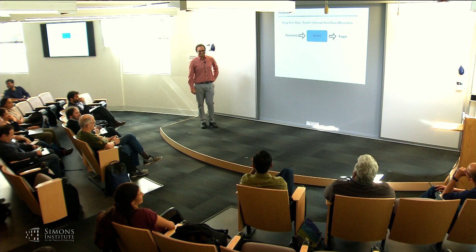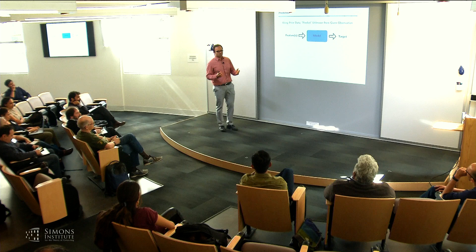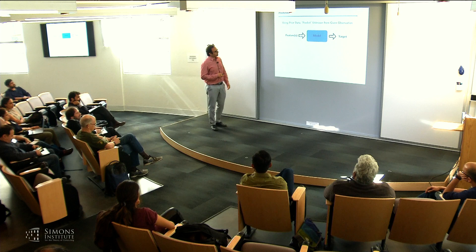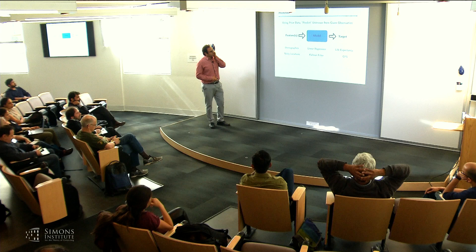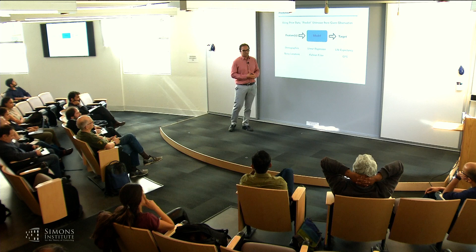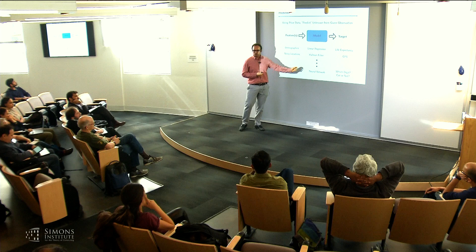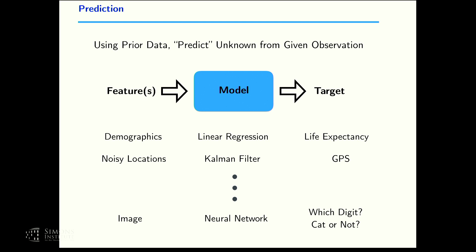Whenever everybody thinks about prediction it's always about forecasting, but it's not necessarily forecasting — it could be just missing values. It could be static or dynamic, and both aspects are important. In the simplest form, you've got some signature, some observation, some features, you build a model and you get your target. A couple of decades back, maybe demographics are your features and you learn a linear regression model to determine life expectancy. Or thinking of dynamics, you've got noisy locations and you build a Kalman filter or hidden Markov model for location tracking. Fast-forward and you've got lots of images, a beautiful neural network that tells you whether it's a cat or whether a digit is five or six.